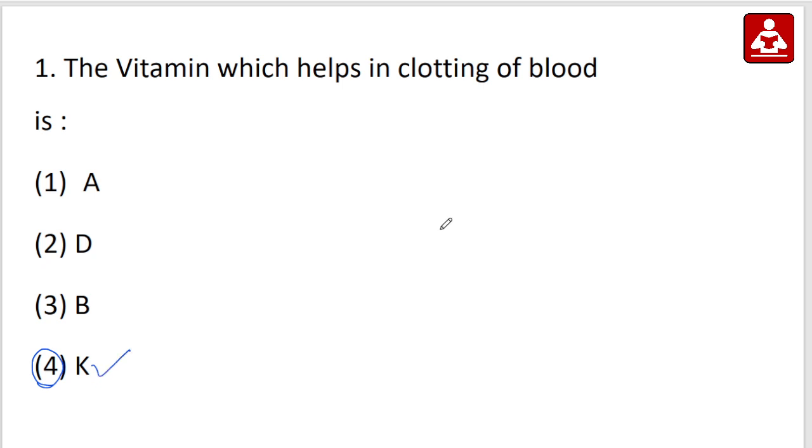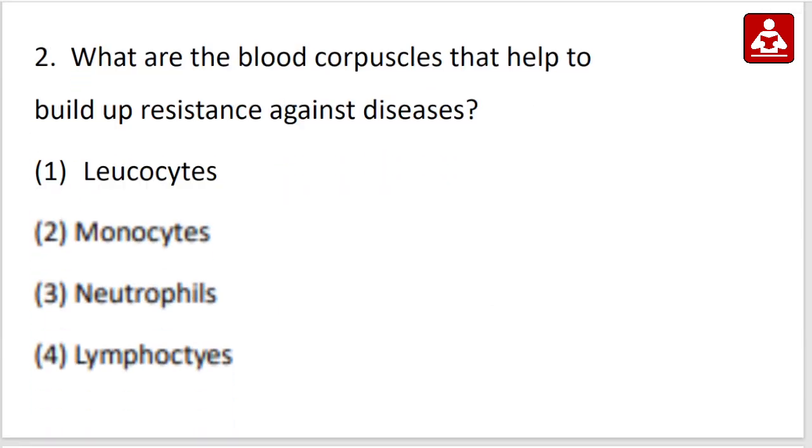Next question. What are the blood corpuscles that help to build up resistance against diseases? Option 1 Leukocytes, Option 2 Monocytes, Option 3 Neutrophils, Option 4 Lymphocytes. Which blood corpuscles help to build up resistance against diseases? Option 1, right answer. Leukocytes. Option 1 Leukocytes is the right answer.